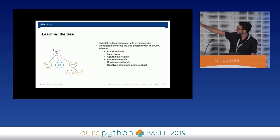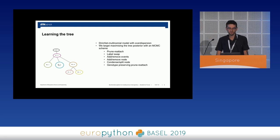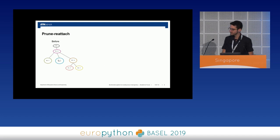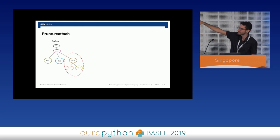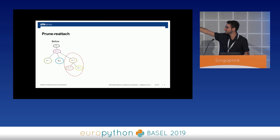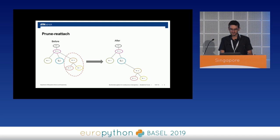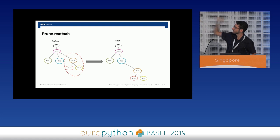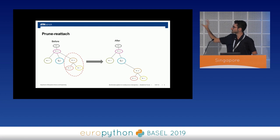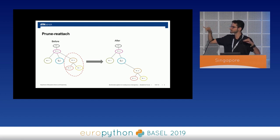The MCMC moves we defined include: first, prune and reattach — we randomly pick one node from the tree, prune it (even if it has children), and reattach it somewhere else in the tree randomly. Afterwards we score the next tree, and if it is significantly better than the previous, we keep it and discard the other.